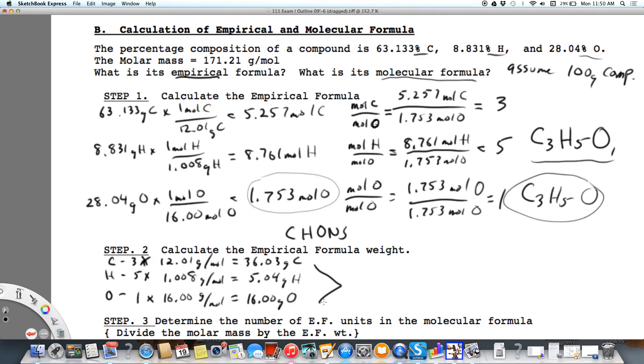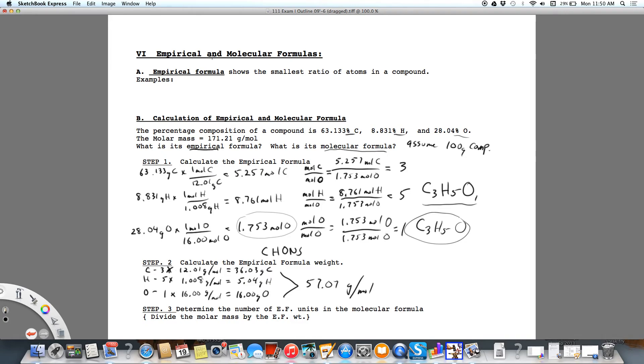Now I'm going to add all those up. This is going to be the mass of the empirical formula, 57.07 grams per mole. Now here's the problem. We were given the mass of the whole thing is 171.21. Those don't match. So that means the molecular formula is not the empirical formula.